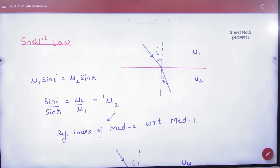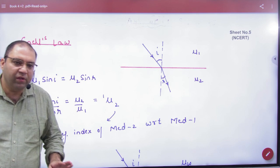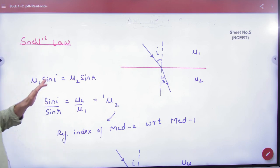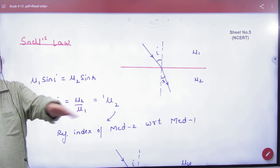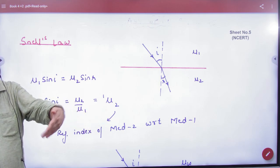Snell's law, which is sheet number 5 in your booklet. According to Snell's law, if you have a ray of light entering from rarer to denser medium, it will bend towards the normal.